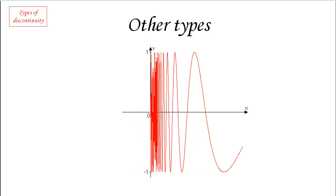Another more interesting situation occurs when, as we approach a value from one side, the function keeps going up and down faster and faster without approaching anything in particular. This kind of oscillating discontinuity doesn't have a particular name but does occur in fairly simple functions. Make sure you're familiar with the three basic types: the vertical asymptote, the single point hole, and the jump — and maybe the domain issue — and that will be enough for our purposes.